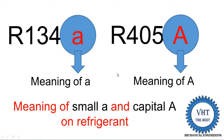For R134a, the 'a' is written as small 'a'. Small 'a' means it indicates that it is an isomer refrigerant. Isomer means the refrigerant has the same chemical formula — suppose you use two refrigerants R134 and R134a, both have the same chemical formula — but the chemical atoms are arranged in a different way, meaning the structure is arranged differently, and when the structure is arranged differently, some properties change. For this type of refrigerant, small 'a' is written.